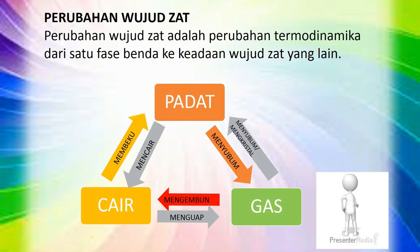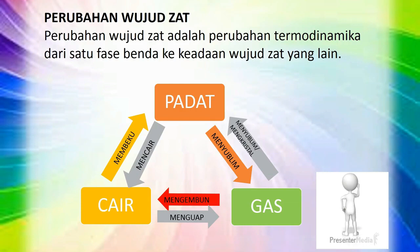Perubahan wujud zat adalah perubahan termodinamika dari satu fase benda ke keadaan wujud zat yang lain. Pada proses perubahan wujud zat terjadi peristiwa melepaskan kalor dan membutuhkan kalor. Contohnya, perubahan zat padat menjadi cair yang dikenal dengan proses mencair atau melebur. Pada fase ini, zat membutuhkan kalor. Selanjutnya, peristiwa perubahan gas menjadi cair atau mengembun. Pada proses ini, zat melepaskan kalor.